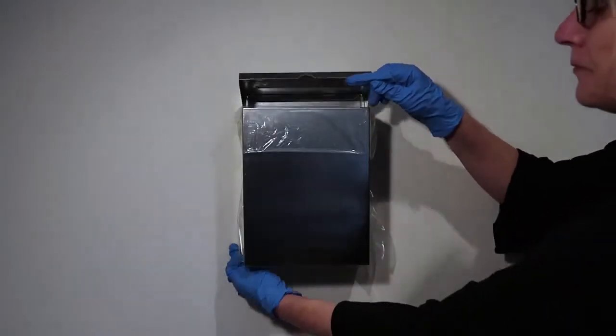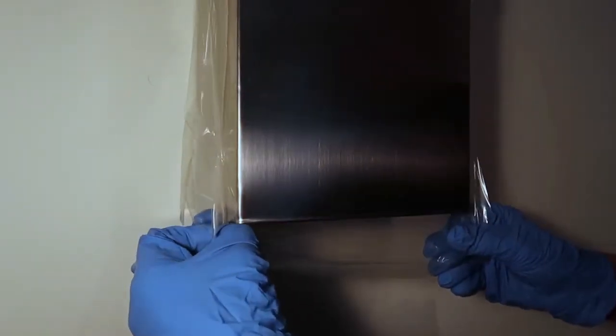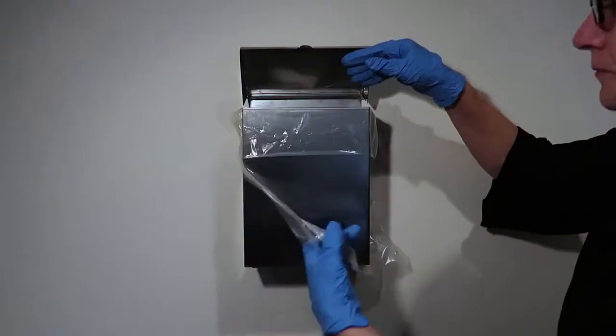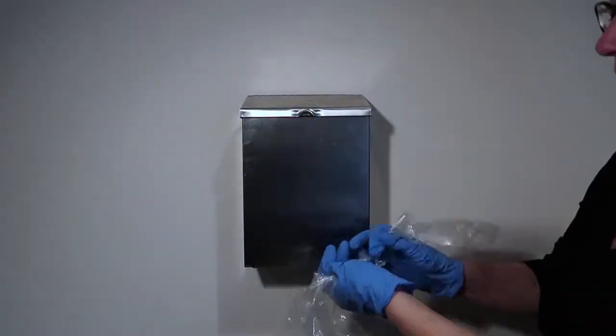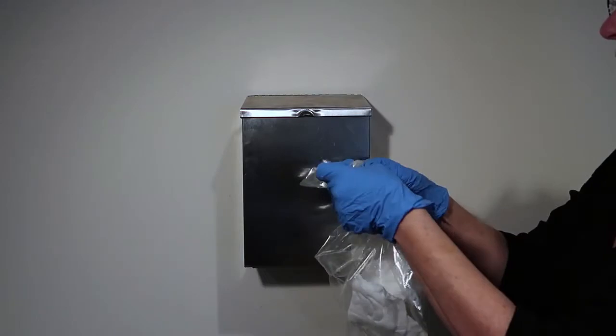Step 4. To remove, pull up on the strap around the bottom of the receptacle and all of the contents remains concealed inside the liner bag. Discard.